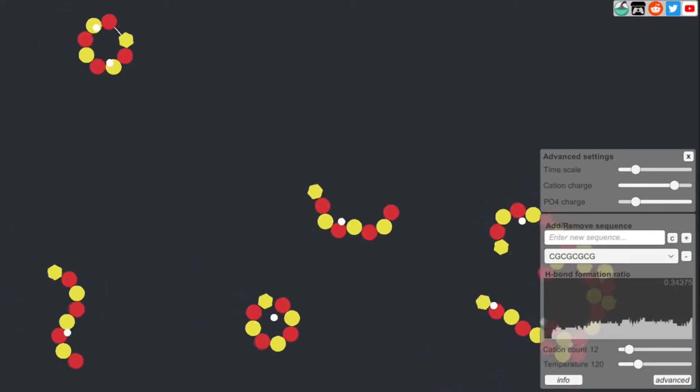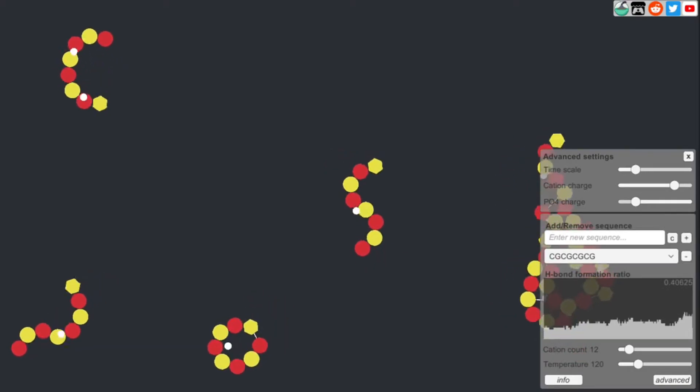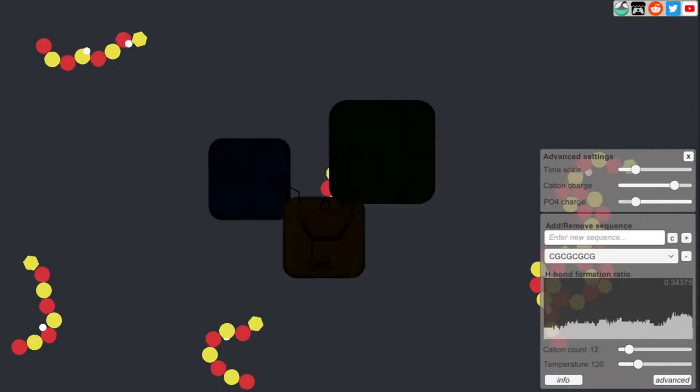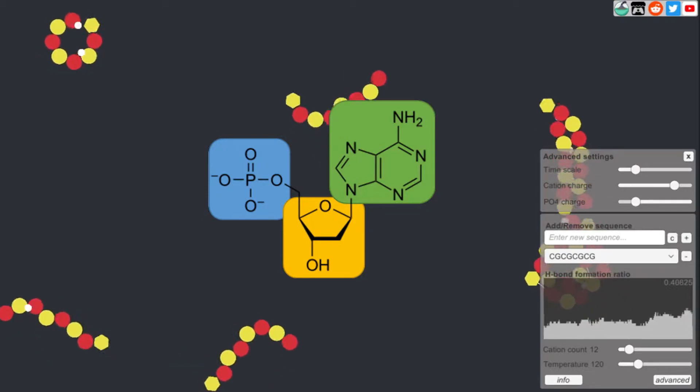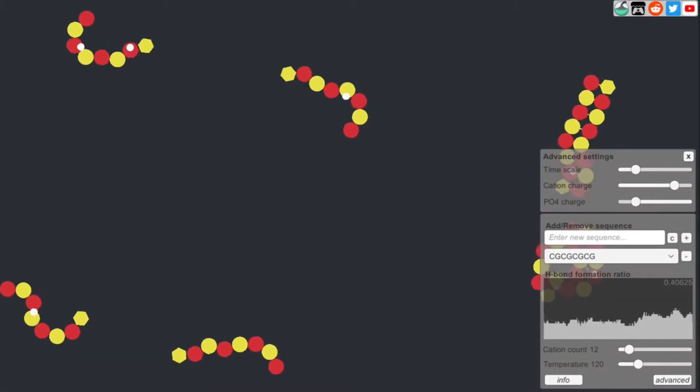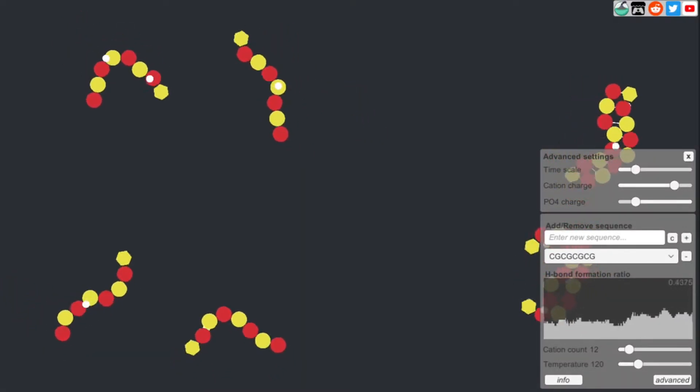DNA simulator begins with eight strands of DNA. Here each circle represents a nucleotide including the base, sugar, and the phosphate. The nucleotides connected to each other form a single-stranded DNA.